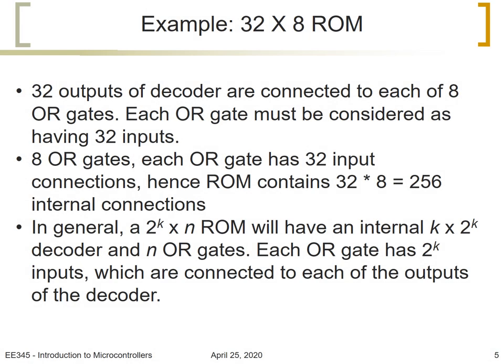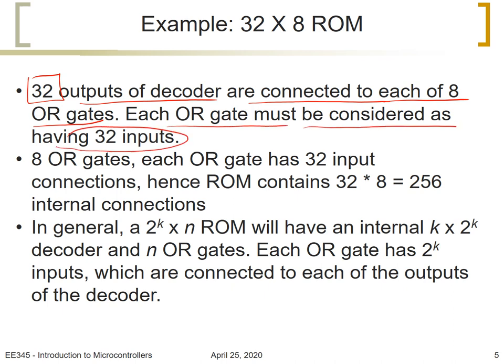We say that the 32 outputs of the decoder are connected to each of the 8 OR gates, or vice versa. Each OR gate must be considered as having 32 inputs. There are 8 OR gates total, and each OR gate has 32 input connections. Therefore, the ROM contains 32 multiplied by 8, which is 256 internal connections.